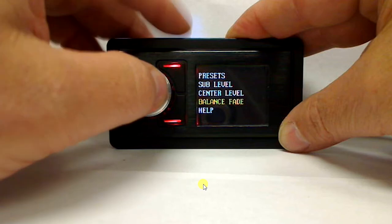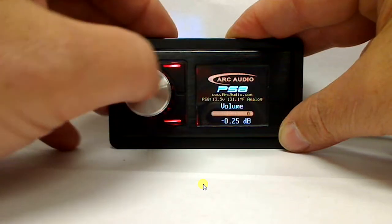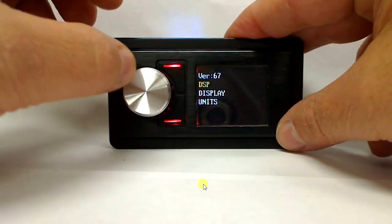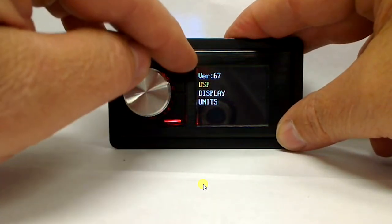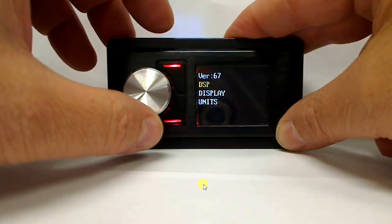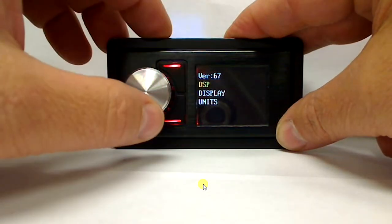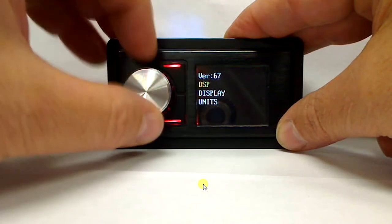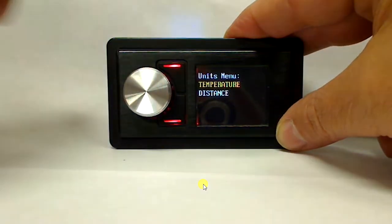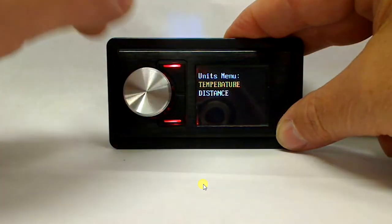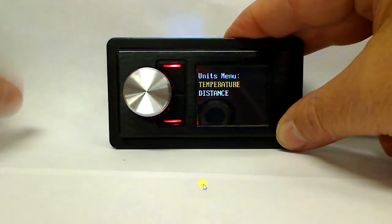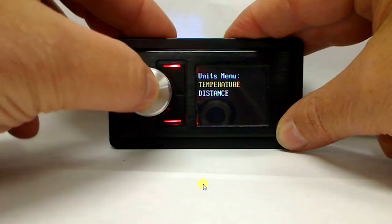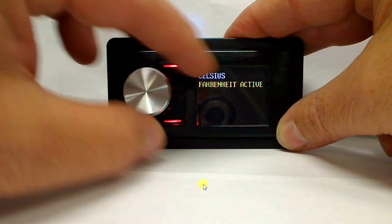Now as we move further into this we can come in and hit the top button here. From the home menu this takes you into a secondary menu. You can see your firmware version number which is version 6.7 on the PSC, and we have DSP, display, and units. Now first we'll start with units. If we go into units you can come in and this is something that any consumer, dealer, whoever's using it can change at any time. You have temperature and distance.